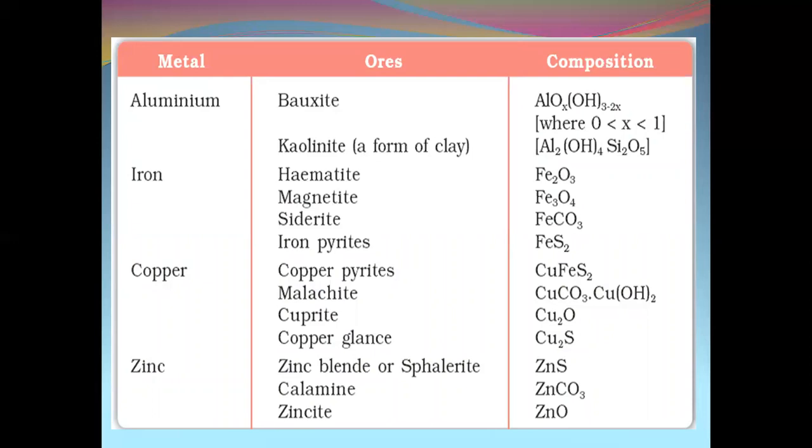Aluminum, whose chief ore is bauxite, whose composition is Al₂O₃·xH₂O. Kaolinite is a form of clay, Al₂(OH)₄Si₂O₅.